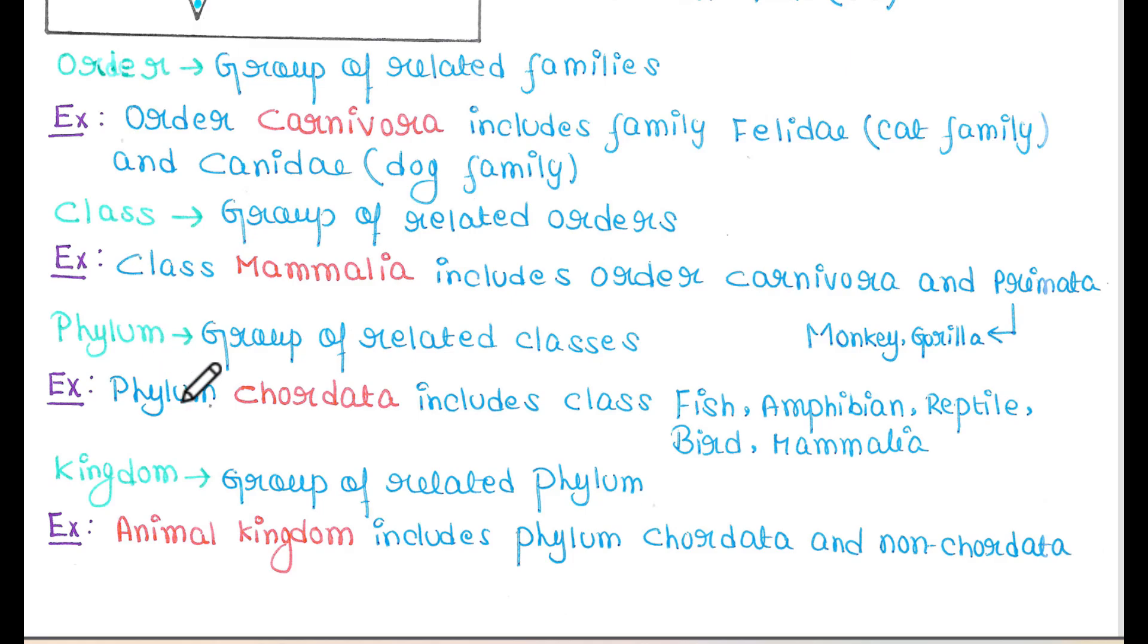Next is phylum. A group of related classes is called phylum. For example, phylum Chordata includes classes fish, amphibian, reptile, bird, and Mammalia. All of these are included in phylum Chordata.